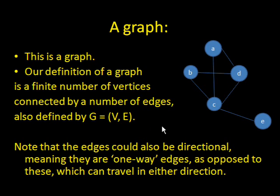Note that graphs can have different properties, that the edges could also be directional, meaning that they can only travel one way as opposed to the example I show you above, which does not show any direction, therefore you can travel along them in any way.